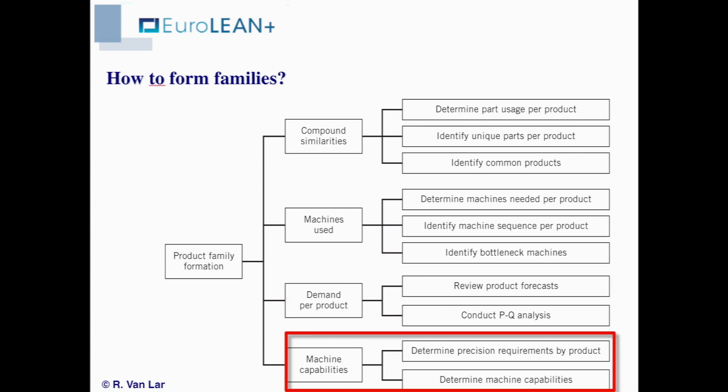Finally, we can look at machine capabilities. If there are products that have special requirements like precision or very special tooling, we will try to group them together so as to minimize the investment needed in these special machines.